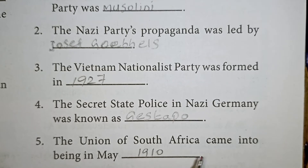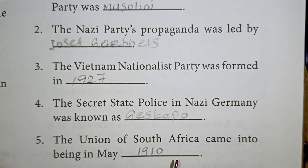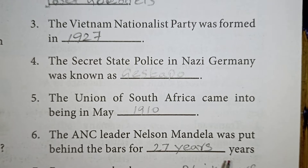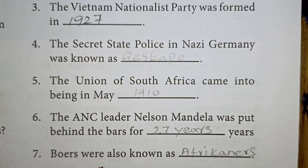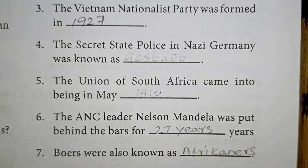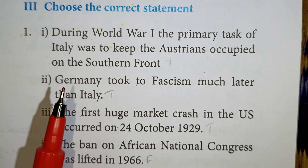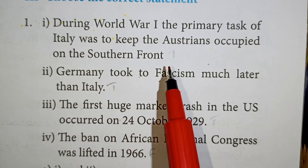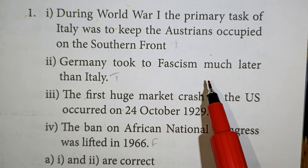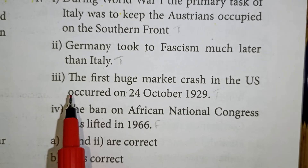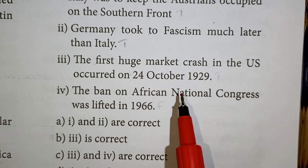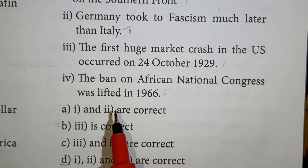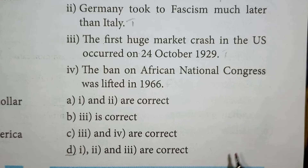The Union of South Africa came into being in May 1910 — correct year. The ANC leader Nelson Mandela was put behind bars for 27 years — correct answer. The Boers were also known as Afrikaners — correct answer. Choose the correct statement: the first huge market crash in the US occurred on 24th October 1929 — true statement. The ban on the African National Congress was lifted in 1966 — false statement.